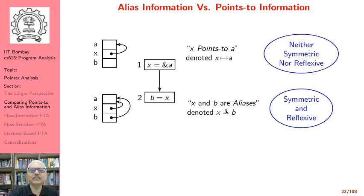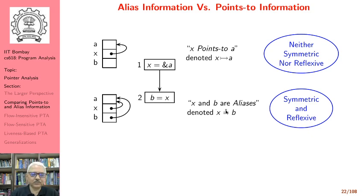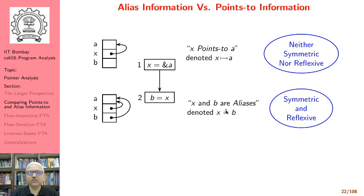On the other hand, the points-to relation is neither symmetric nor reflexive. When x holds the address of a, we cannot say a holds the address of x, so it is not symmetric. Similarly, we cannot say x holds the address of itself. So that is the fundamental difference: alias relations are symmetric and reflexive, while points-to relations are neither.